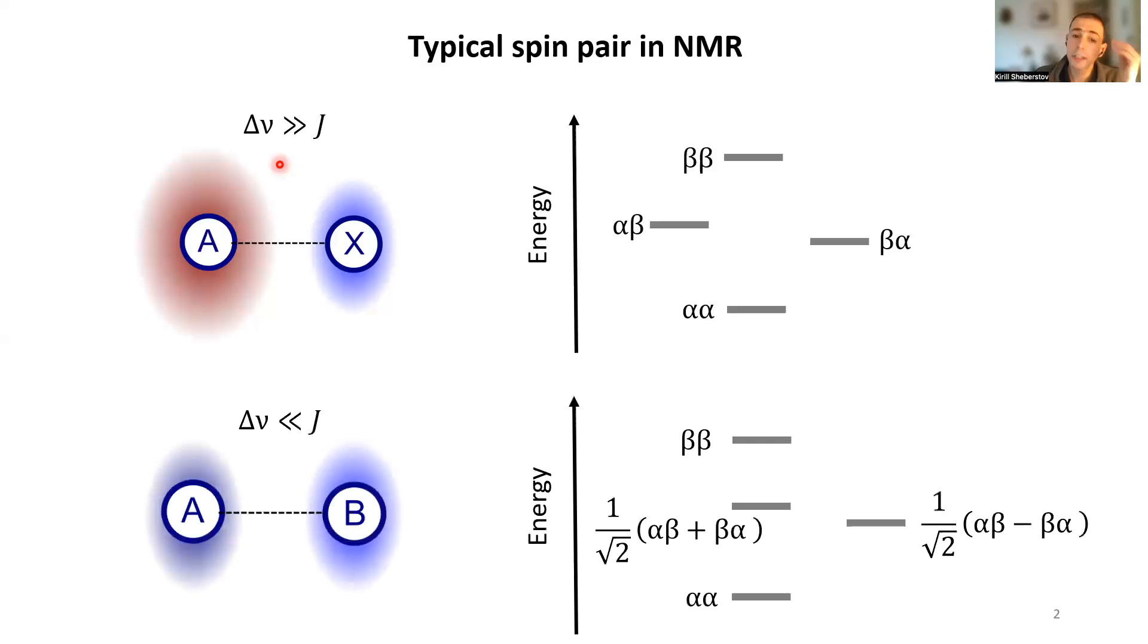However, there are some cases where this is not the case. J coupling can be much larger than difference of chemical shifts. In this case, the basis describing the system would be different. It will consist of three triplet states and one singlet state, or almost triplet and singlet states.